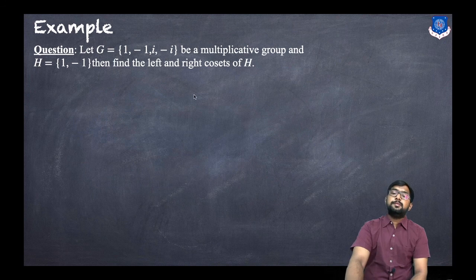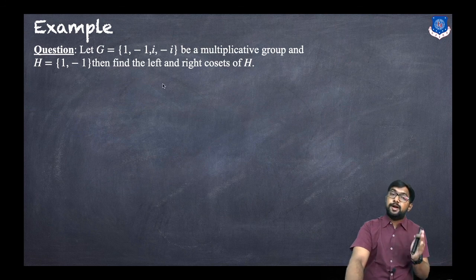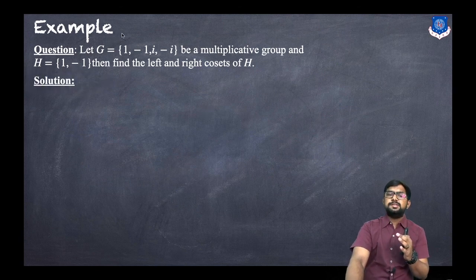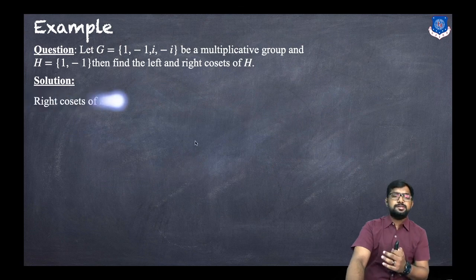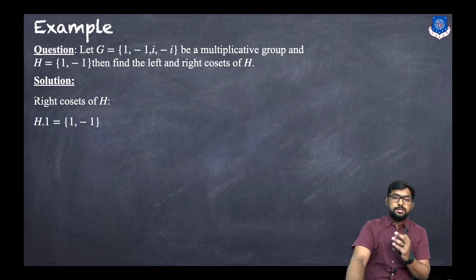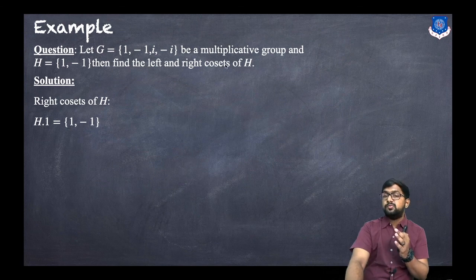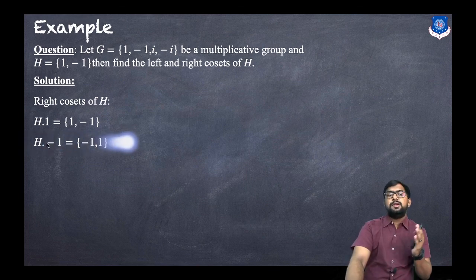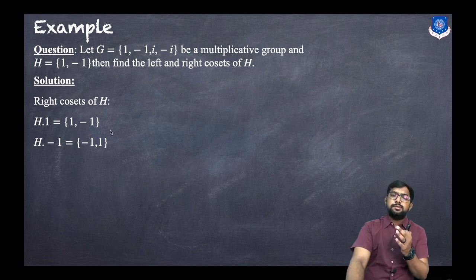Let us discuss an example. Let G = {1, -1, i, -i} be a multiplicative group and H = {1, -1}. Find the left and right cosets of H. For right cosets: H·1 = {1·1, -1·1} = {1, -1}, and H·(-1) = {-1·1, -1·(-1)} = {-1, 1}.